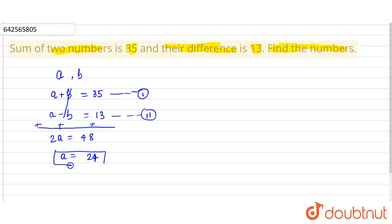Now we will put this value in equation number one and we can find the value of B. So 24 plus B is equals to 35. B will be equals to 11.